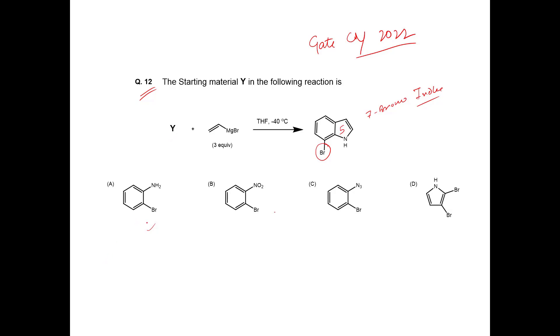If you look into the options, only these three have Bromine with the benzene ring. Option 2,3 di-bromo pyrrole cannot be possible to form the product from this. So it is wrong, option D cancels out.